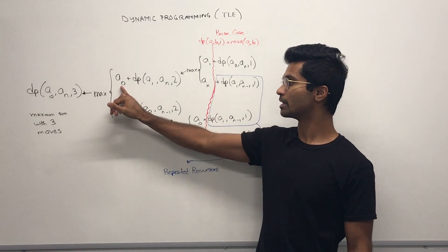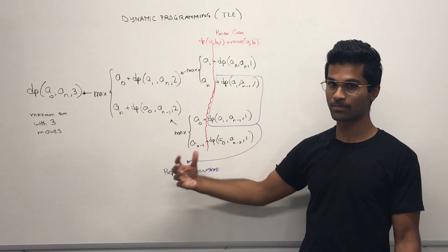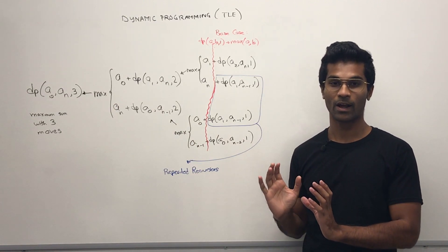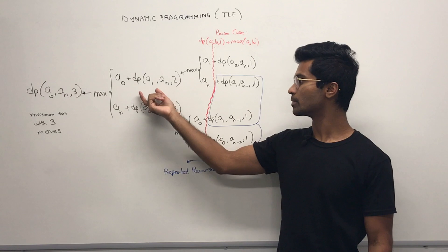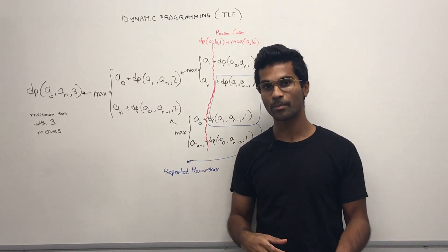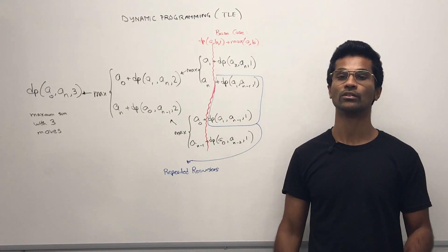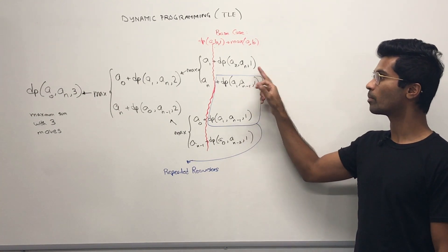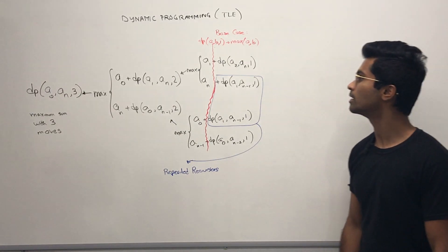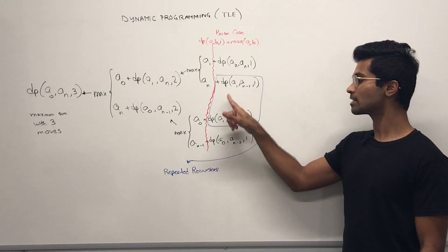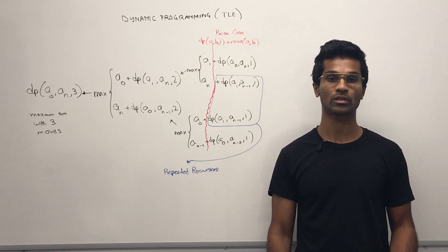Now, if we take from the beginning, we have a shorter array and we have two moves. Whereas if we take from the end, it's pretty much the same thing, except the shorter array is from the end. So at every step, we either take from the front or the end and ask ourselves the same question again. After we get down to one possible move left, we've hit our base cases. You'll also note that some subproblems are repeated recursions, so we know we can cache our results to speed up the algorithm.